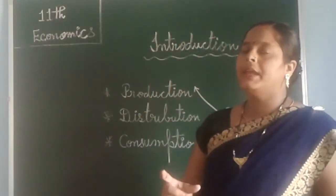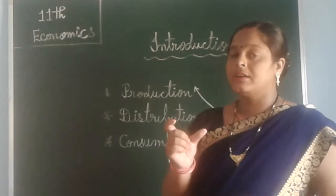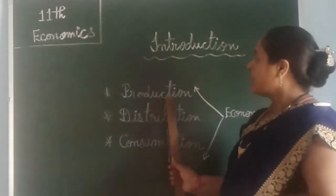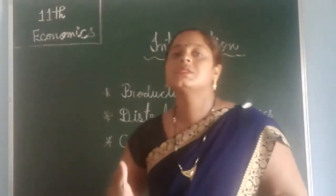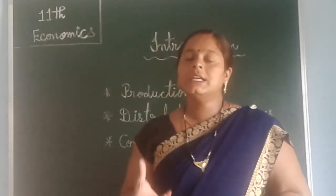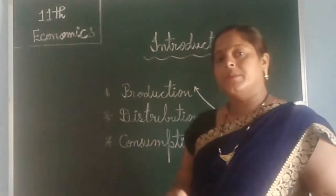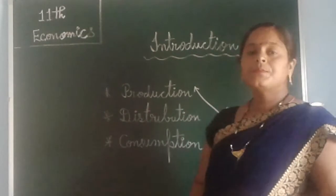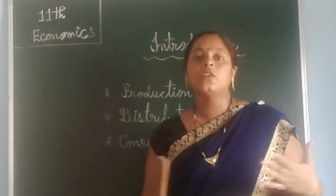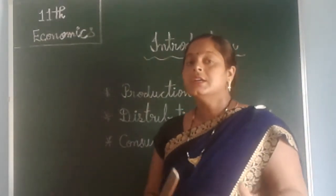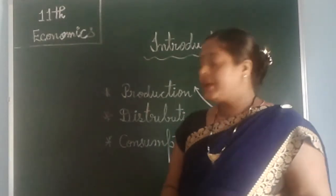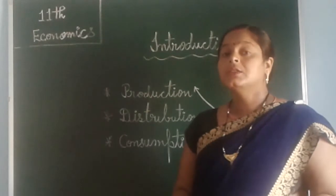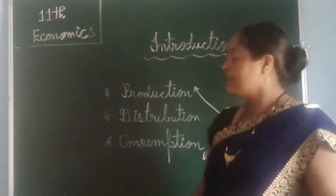Economics has three major keys. Firstly, production — how to produce things. We will learn this in economics. After production, the second one is distribution. Because economics is a social science, it is directly related to society. So it involves the distribution of those products in society.